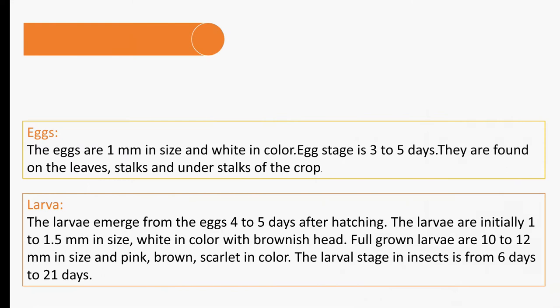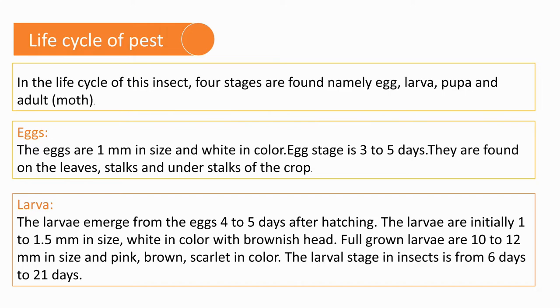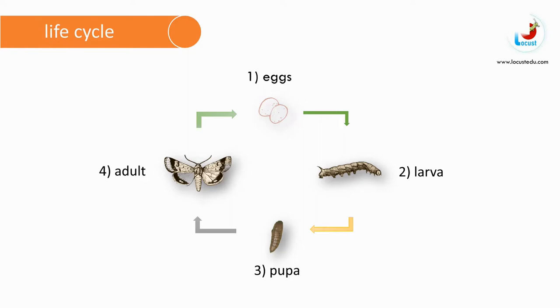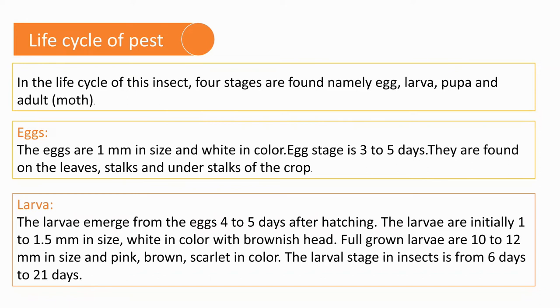In the life cycle of this insect, four stages are found: egg, larva, pupa, and adult. Eggs are 1mm in size, white in color, and the egg stage lasts three to five days. They are found on leaves, stalks, and under the stalks of the crop. The larvae emerge from the eggs four to five days after hatching. Initially, larvae are 1 to 1.5mm in size, white in color with a brownish head. Fully grown larvae are 10 to 12mm in size and pink-brown scarlet in color. The larval stage lasts six to twenty-one days.